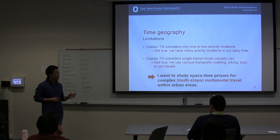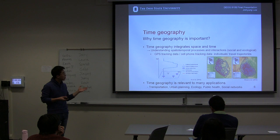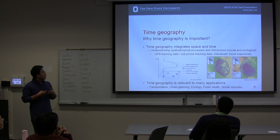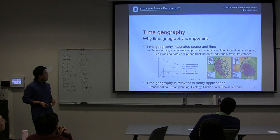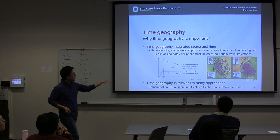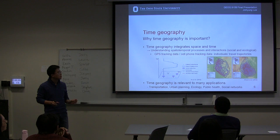I would like to end my presentation with this slide. Why is Time Geography important? Time Geography integrates space and time, enabling better understanding of spatial-temporal processes and interactions in social and ecological contexts. Developments in GPS and location-based services give us GPS tracking data and cell phone tracking data, providing insights into individuals' travel trajectories. The left picture shows a person's space-time path estimated by cell phone tracking data, and the right picture shows two tigers' travel trajectories and their home range.